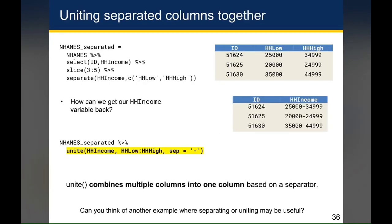On the other hand, let's say that your data frame had separate columns for the lower and upper bounds of household income, and you wanted to combine them into a single column. The way you would do this is using the unite function, which is basically the opposite of the separate function.